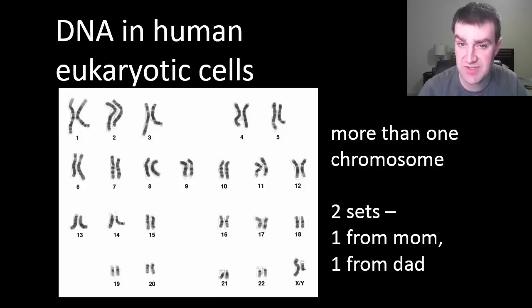Now eukaryotic mitosis is a little bit more complicated because eukaryotes have more than one piece of DNA in their nucleus. This is just an example of maybe human DNA. In our body cells we have 46 total different separate pieces of DNA.